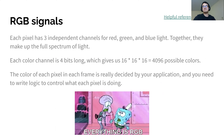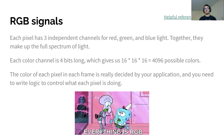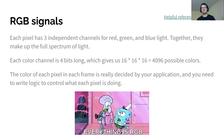RGB signals — you're probably used to this if you have RGB lights or RGB keyboards. Every color you can represent can be made up of three independent channels of red, green, and blue. For our purposes, each color channel is four bits long. With four bits you can represent 16 colors per channel, so 16 times 16 times 16 gives you 4,096 possible color combinations. The color of each pixel is dependent on the signal you send, which is basically what you make in your own application — you send a specific value for each channel to get the color you want.